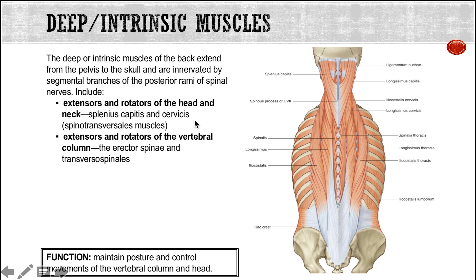Probably the most important muscle groups are the deep or intrinsic muscles. The deepest muscles have a high proportion of muscle spindles, meaning a high proportion of stretch receptors that are mainly proprioceptive. This means there is a correlation between injury associated with the intrinsic muscles and back pain. These muscles extend from the pelvis to the skull and are innervated by branches of the posterior rami of spinal nerves, including muscles that extend and rotate the head and neck — such as splenius capitis and cervicus — and muscles that extend and rotate the rest of the vertebral column, namely the erector spinae and transversospinalis groups.